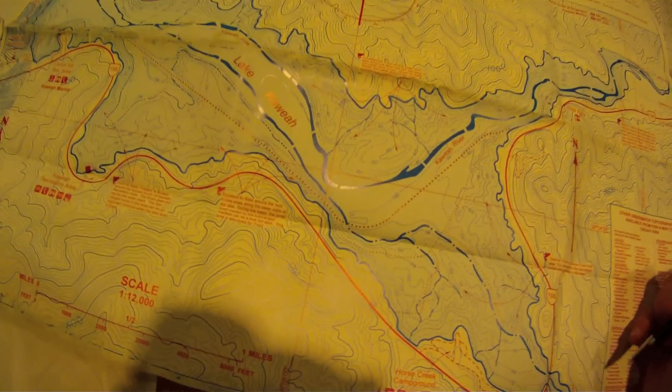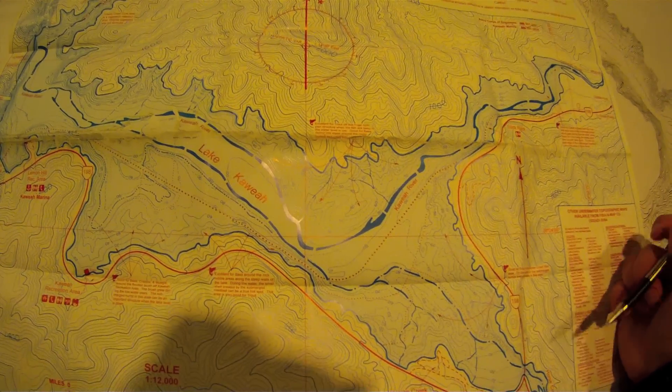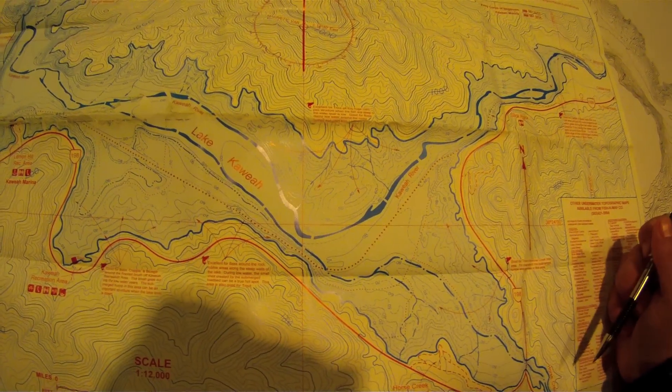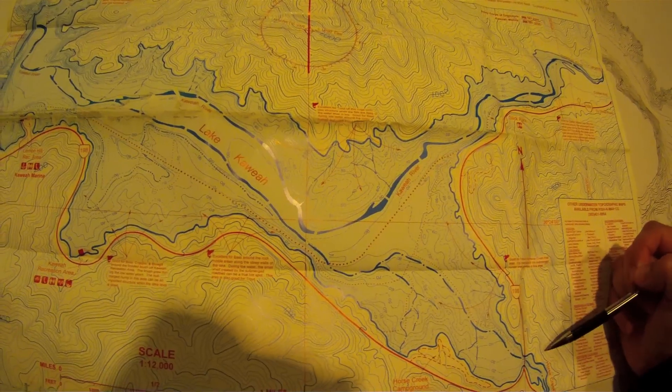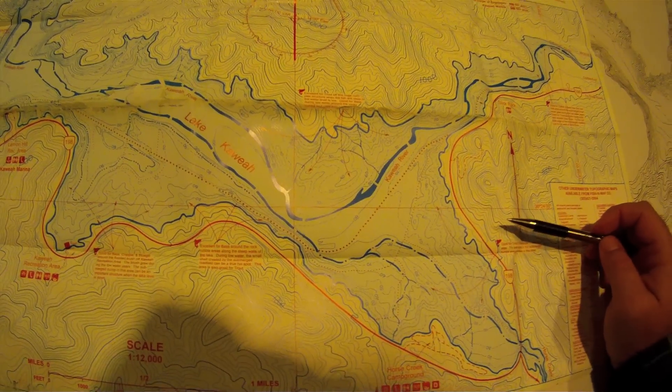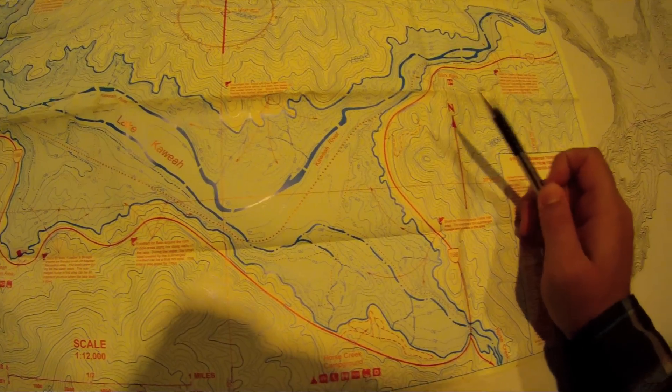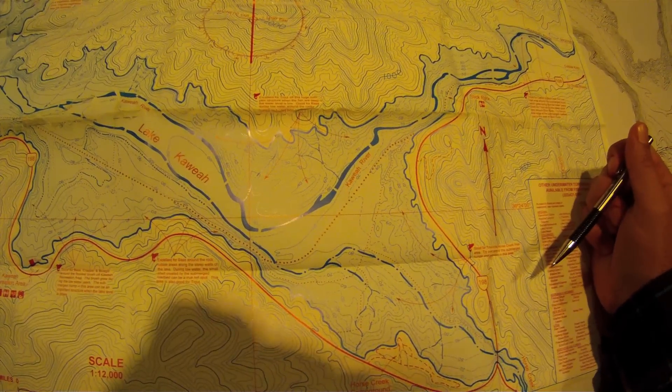So we'll start with lake number one. This is Lake Kawia. I've actually never fished this lake before so it'll be interesting. When I do fish this lake in the future I may show up and this lake is completely covered in trees. The shoreline is totally covered in trees and I may not be able to make the casts that I think I can make by just looking at this map at first glance.